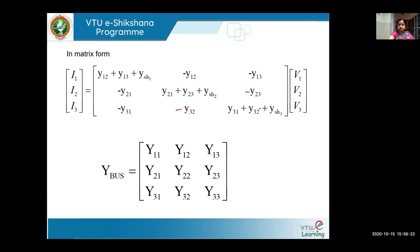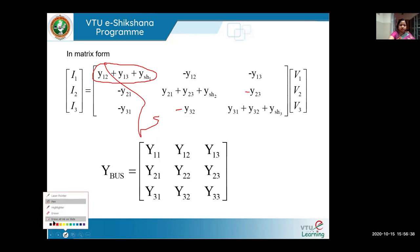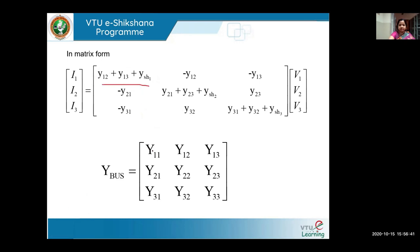It is very important to understand the difference between small y (line admittance) and capital Y (bus admittance element). The bus matrix elements are capital Y, while the line admittance values are small y. The diagonal elements give the YBUS self-admittance terms, and the off-diagonal elements give the transfer admittance terms.